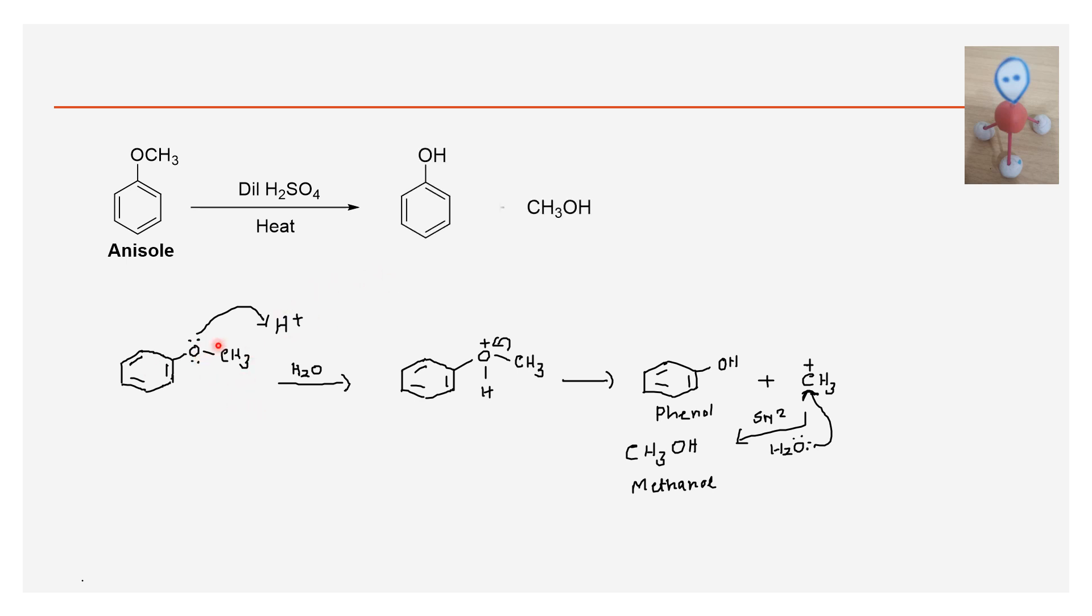First, the oxygen lone pair is protonated to get an intermediate. The O-CH3 bond breaks, giving phenol and CH3+ carbocation, a methyl carbocation. The methyl carbocation undergoes SN2 reaction with water to give alcohol. The final products are phenol and methanol.